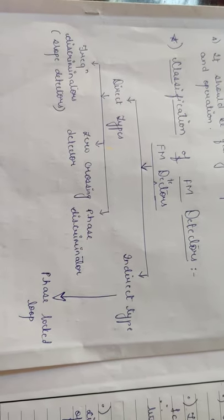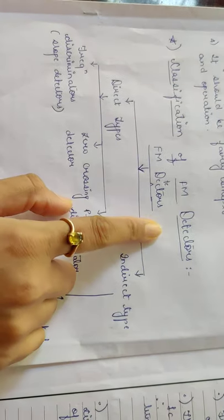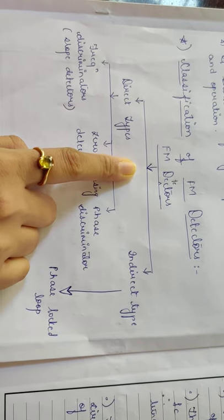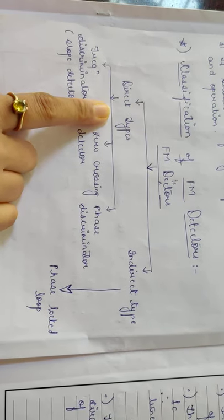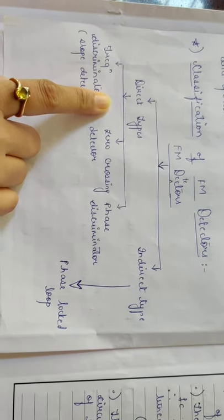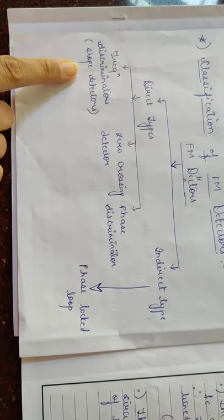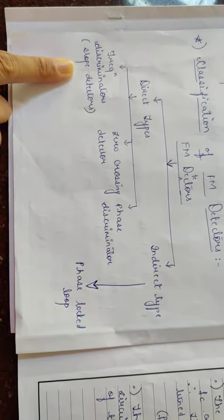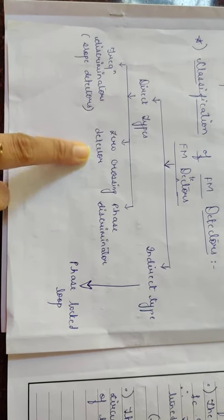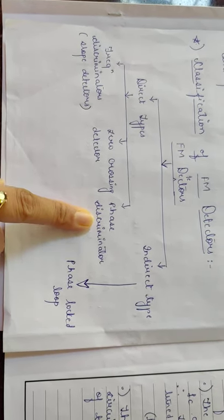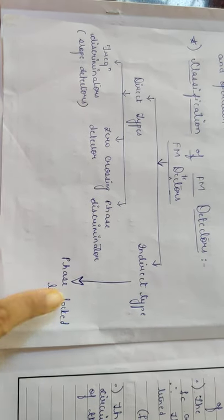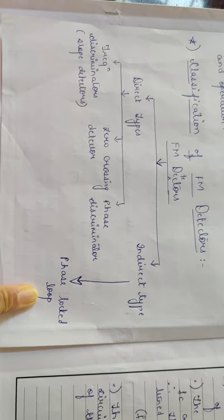Next, we are going to see the classification of FM detectors. FM detectors are classified into two types: direct types and indirect types. In direct types, it is classified into three types: frequency discriminators (also called slope detectors), zero crossing detectors, and phase discriminators. In indirect type, we have the phase lock loop.